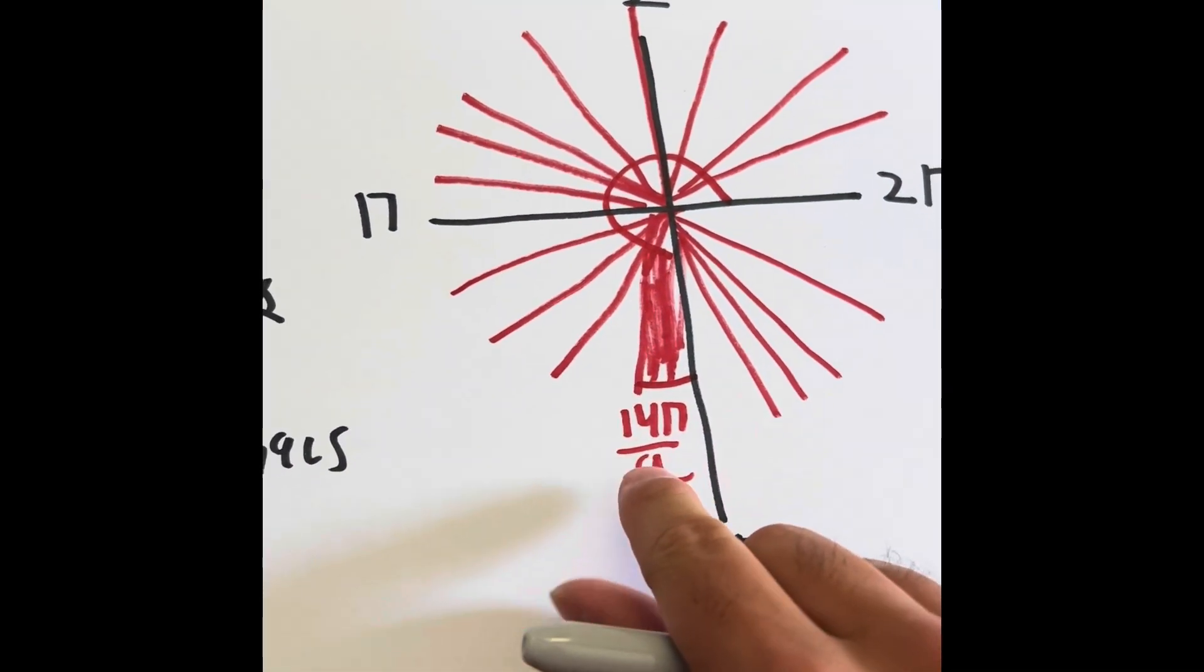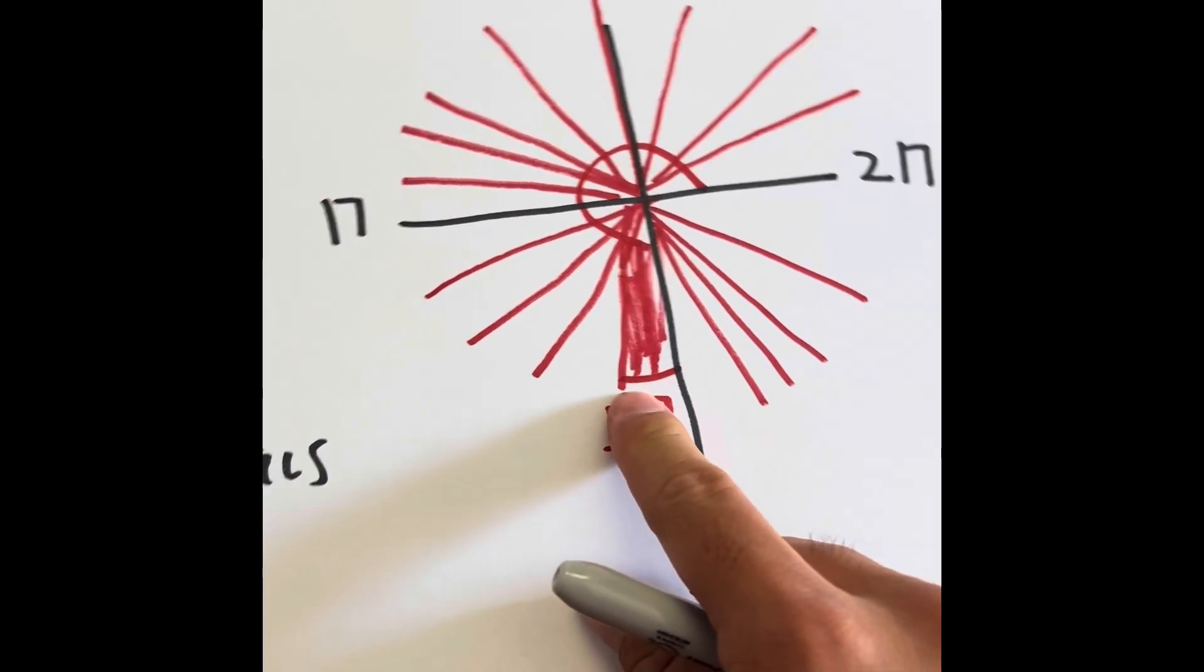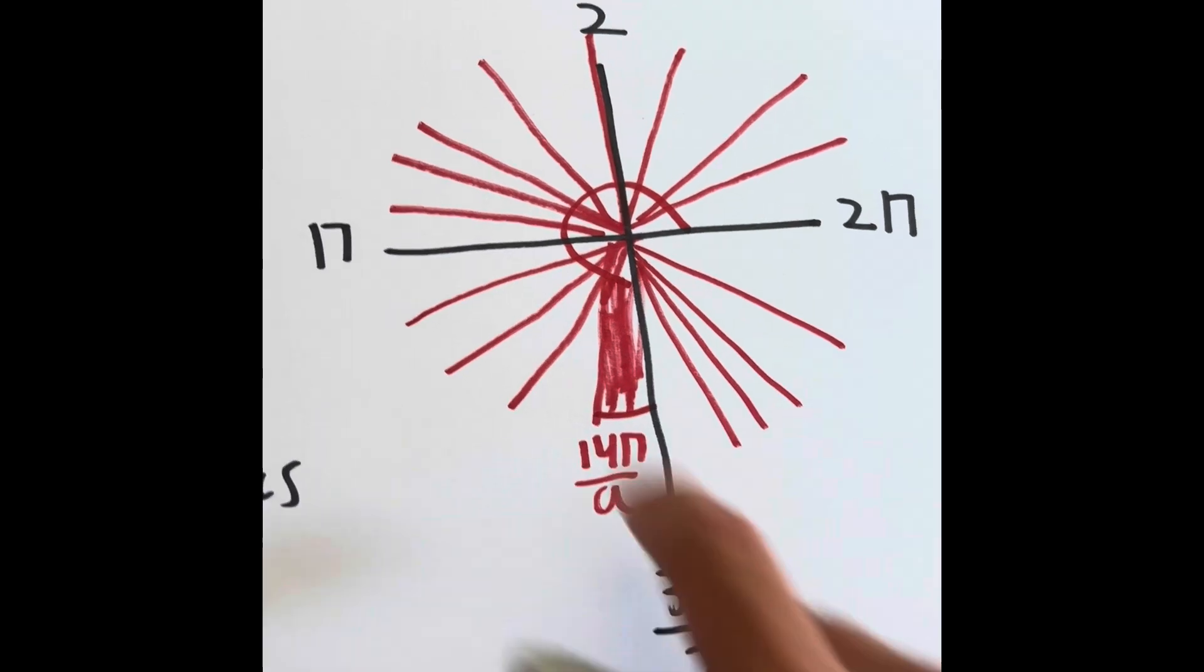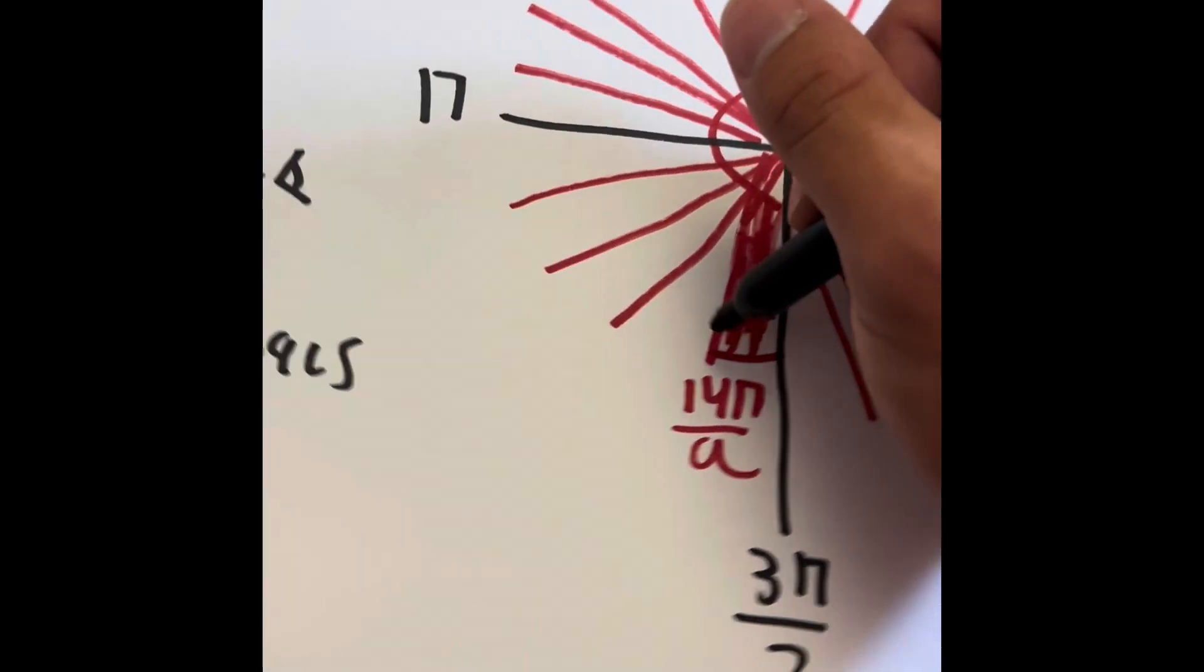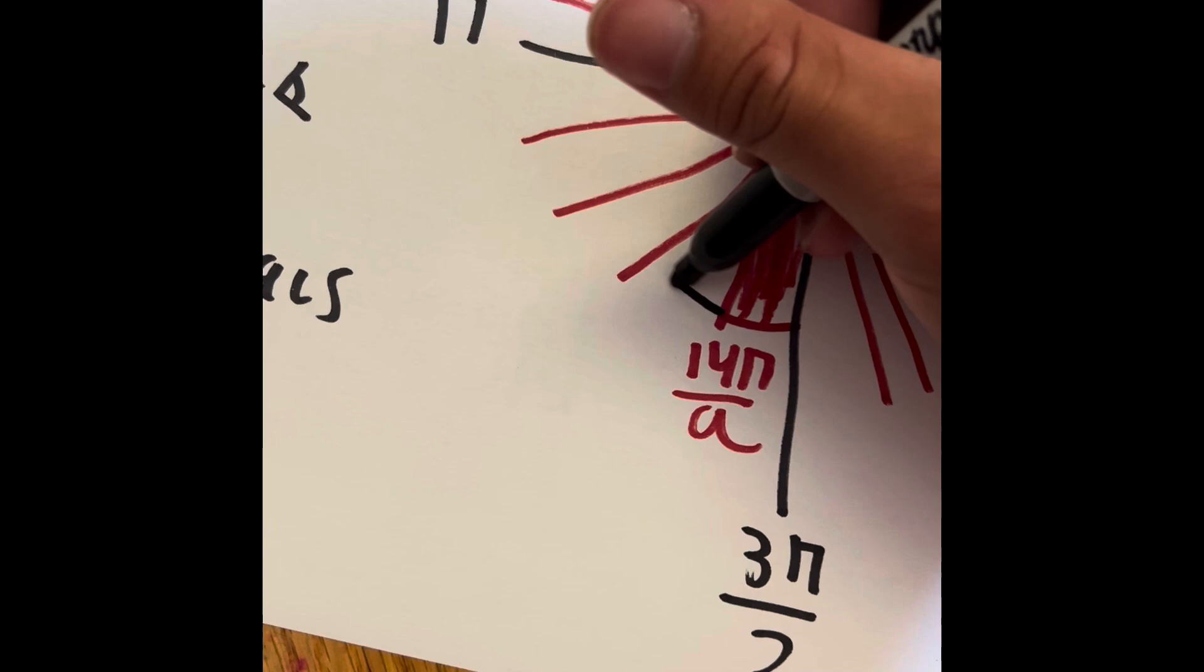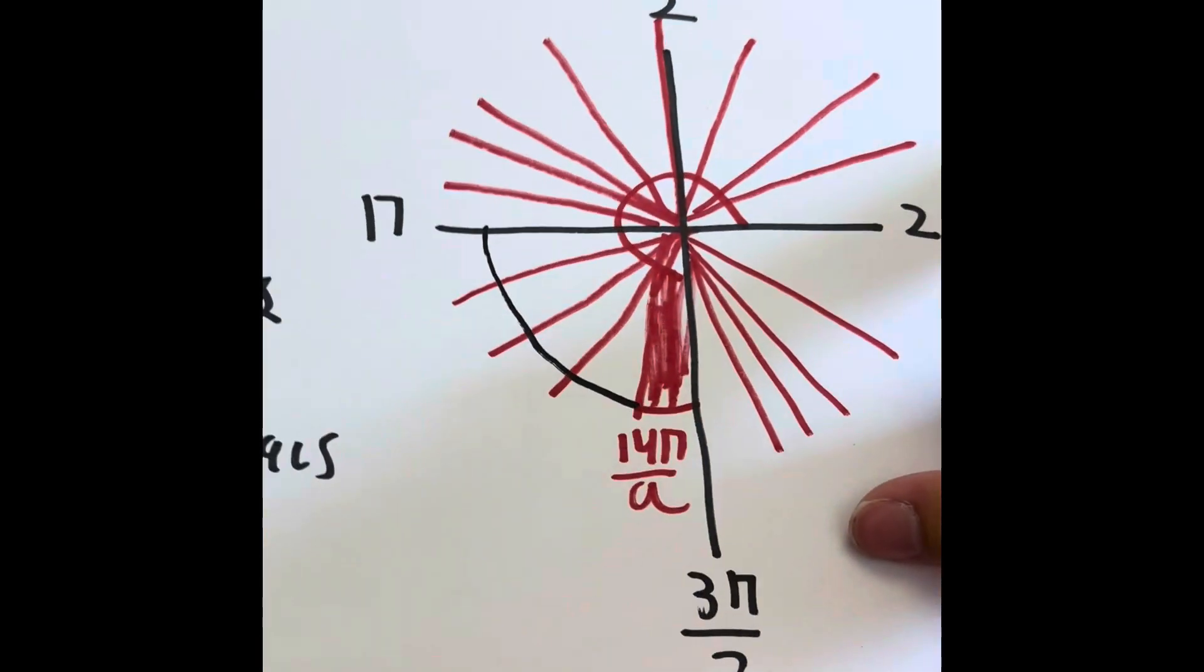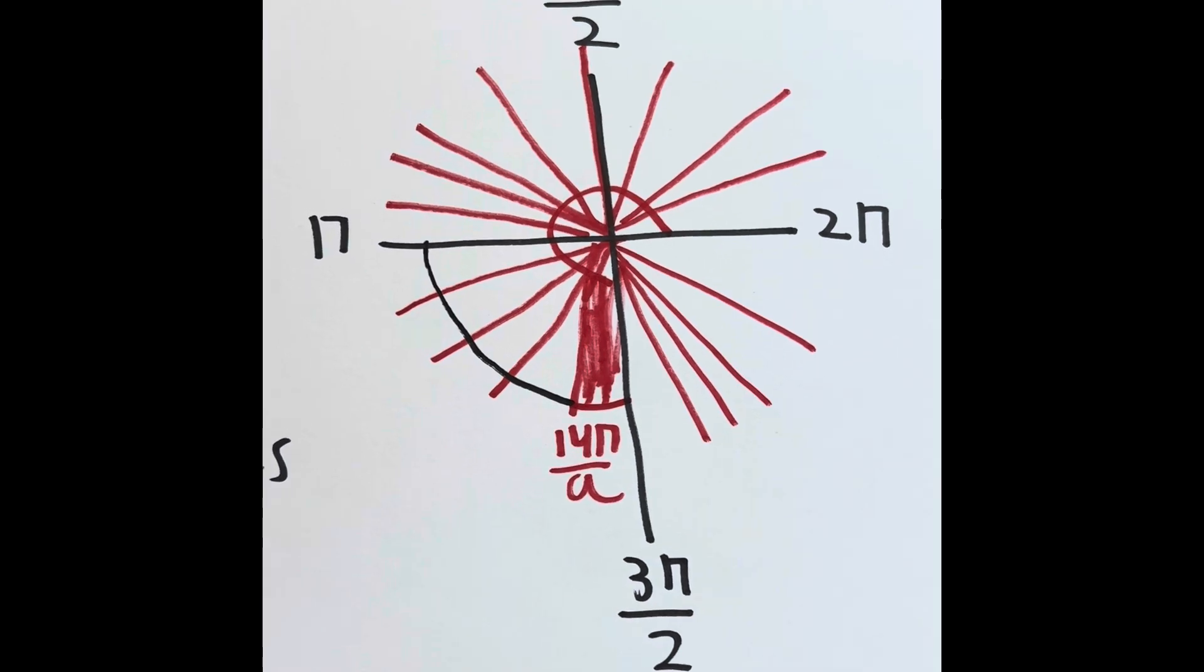If this 14π divided by 9 is here, which x-axis is closer? Yeah, the π right here is closer. So we have to go this way. So we have 1, 2, 3, 4.